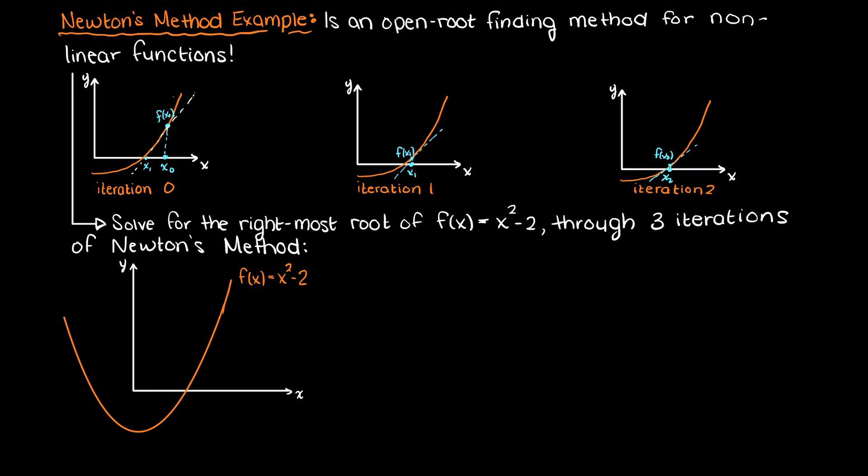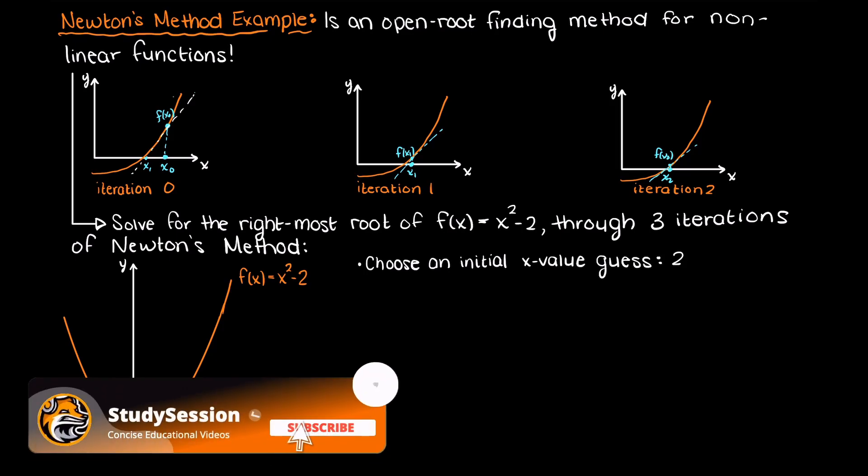Our first step in Newton's method is that we must choose an initial input guess value, so let's just use 2.